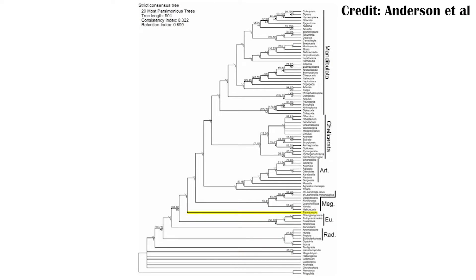Now, there are a lot of names on this phylogeny. At the bottom are animals that aren't arthropods — so they're not animals with an exoskeleton and, importantly, jointed appendages. This includes animals like Opabinia, tardigrades, and Hallucigenia, which is probably more closely related to the velvet worms.